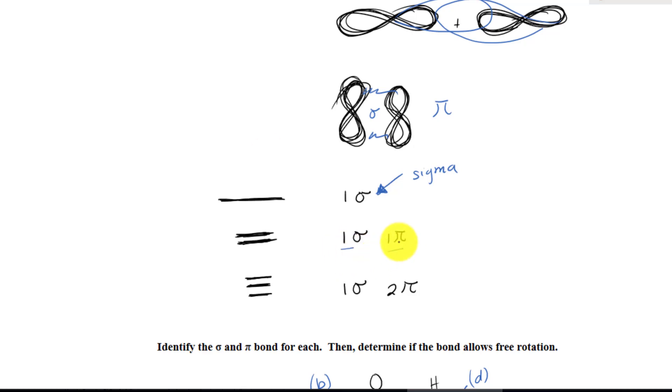And lastly, for the triple bond, you have one sigma bond and two pi bonds. You are responsible for knowing the number of sigma and pi bonds for different types of bonds: single bond, double bond, and triple bond.